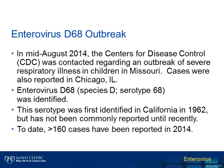In mid-August of this year, the Centers for Disease Control was contacted regarding an outbreak of severe respiratory illness in children in the Kansas City, Missouri area. Similar cases were also reported in Chicago, Illinois, and subsequently in the surrounding cities and states. Clinical samples were submitted to the CDC, and enterovirus species D, serotype 68, was identified as the cause of the disease in these patients.